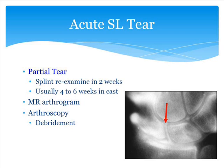For athletes with partial tears, we typically splint them and reexamine them in about two weeks. For professional-level athletes, we may get an MRI right away. Arthrography can be helpful — dye is placed in the joint and you're able to see if there's leakage between the bones, which would indicate a tear. With partial tears, we will typically try to treat them conservatively with casting, usually four to six weeks. But if they fail that treatment, we'll think about doing arthroscopy for a debridement.